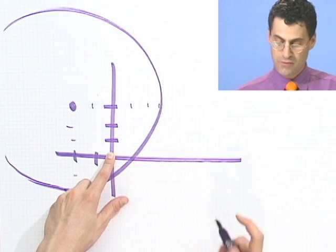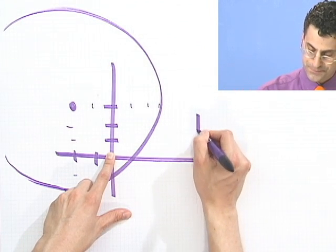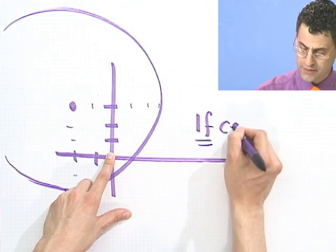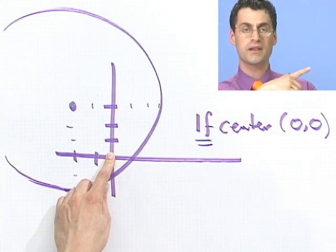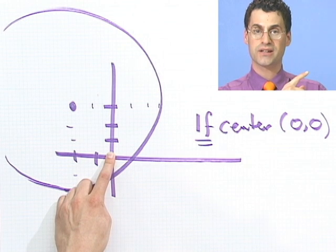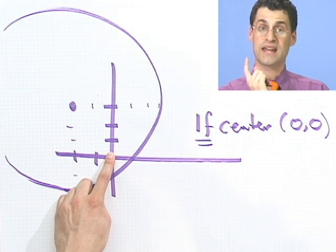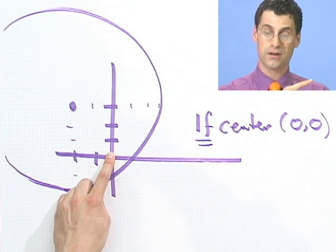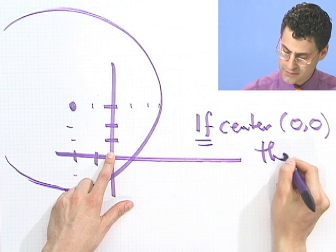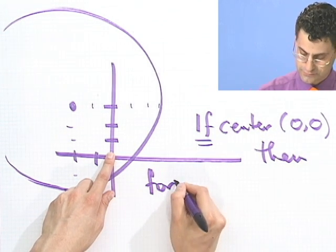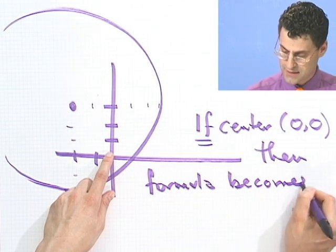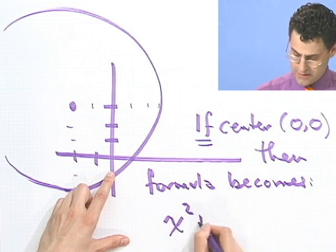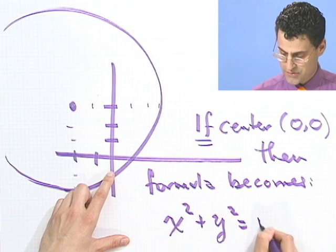Okay, now there's a special case. Suppose that center was actually right at the origin. Well, that means—so if the center is at (0, 0), then the formula that I have written over there is actually real easy, because then h is 0 and k is 0. And so then the formula becomes what?